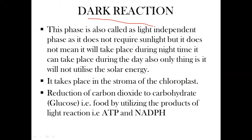Dark reaction, also called the light-independent phase, takes place in the stroma of the chloroplast. Why in the stroma? Because whatever enzymes are required for the dark reaction to take place, those enzymes are present in the stroma of the chloroplast. That is why dark reaction takes place in the stroma.